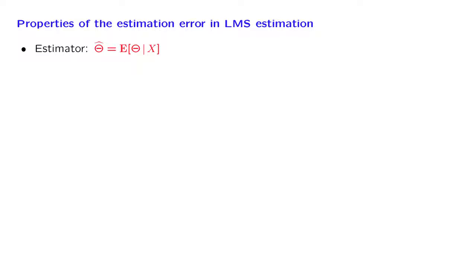Recall that our least mean squares estimator is the conditional expectation of the unknown random variable given our observations. Let us define the error, which is the difference between the estimator and the random variable that we're trying to estimate.